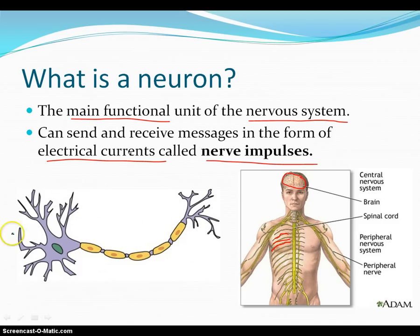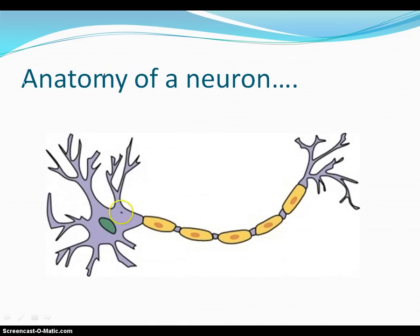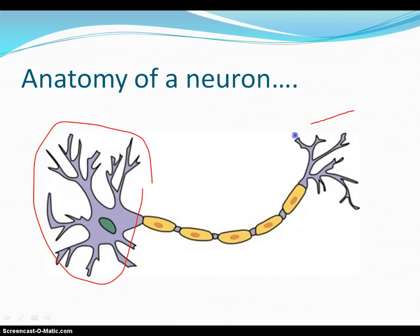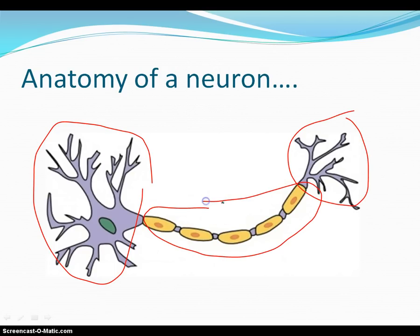Here I have a diagram of a neuron. This is a really small thing; however, it actually has the ability to do a lot in your body. Let's go ahead and explore it a little bit more. You can see that this part over here looks a little bit different than this part over here, and this part here in the middle looks a little bit different than all these other parts. So let's talk about what each part of the neuron is.